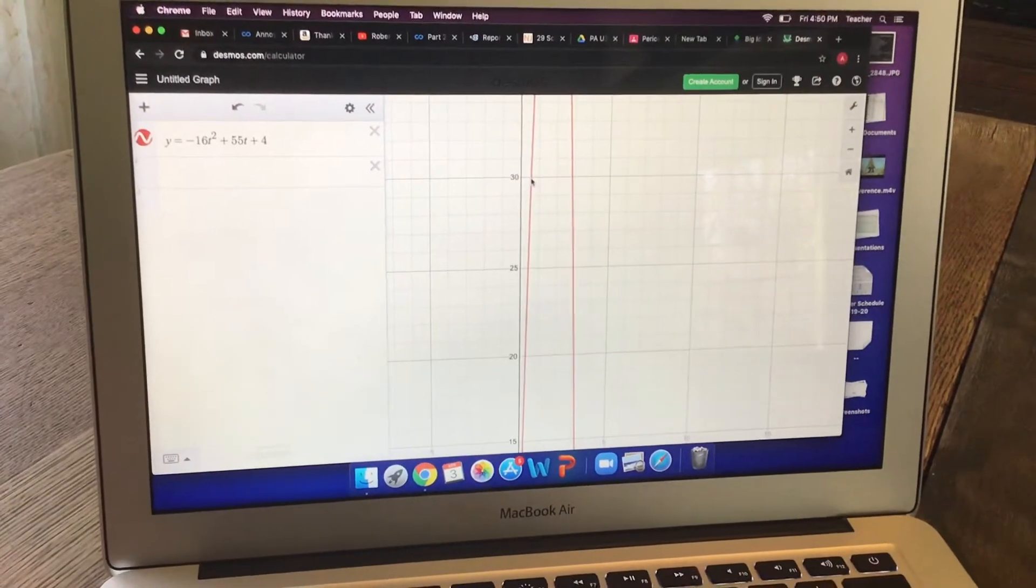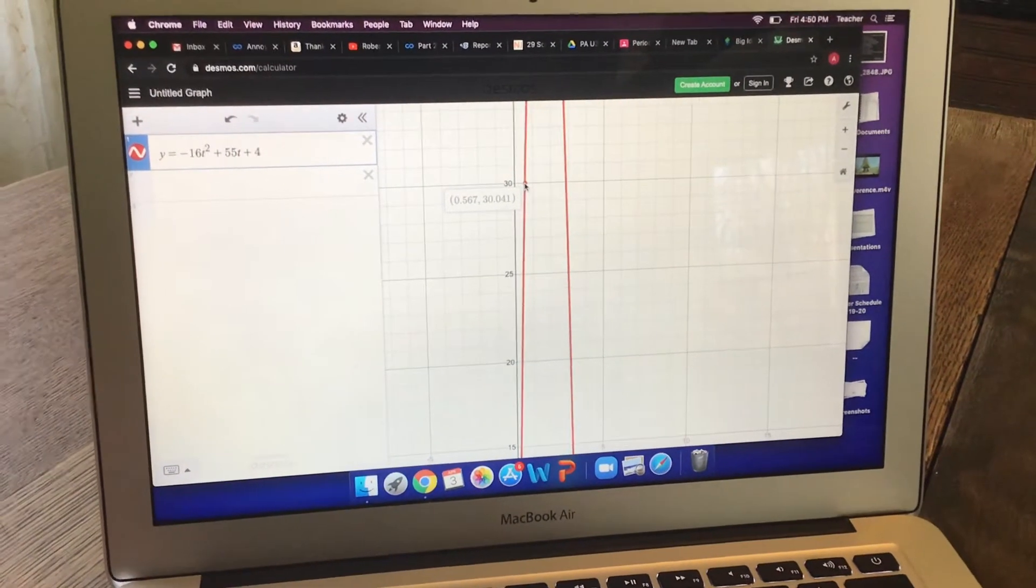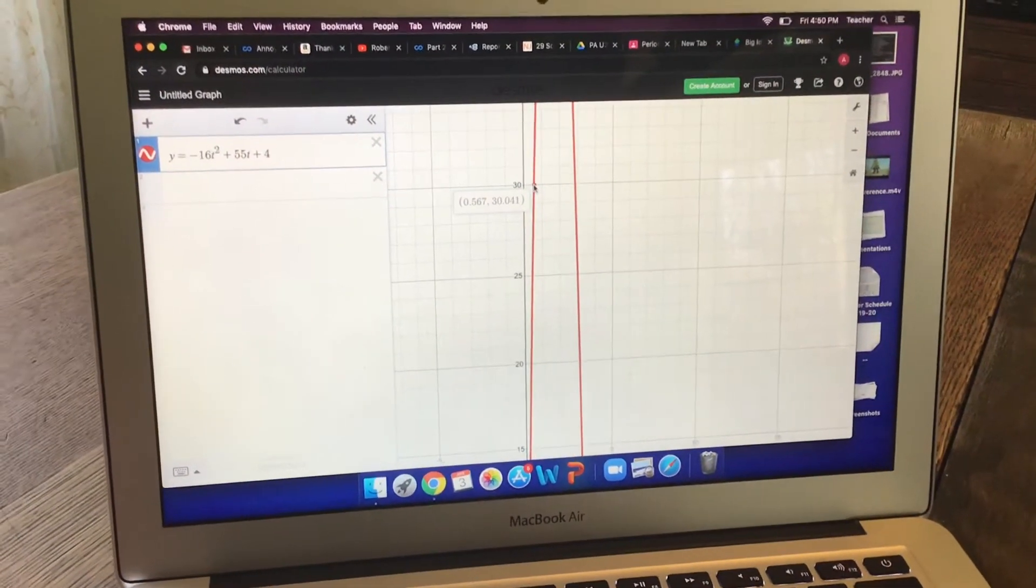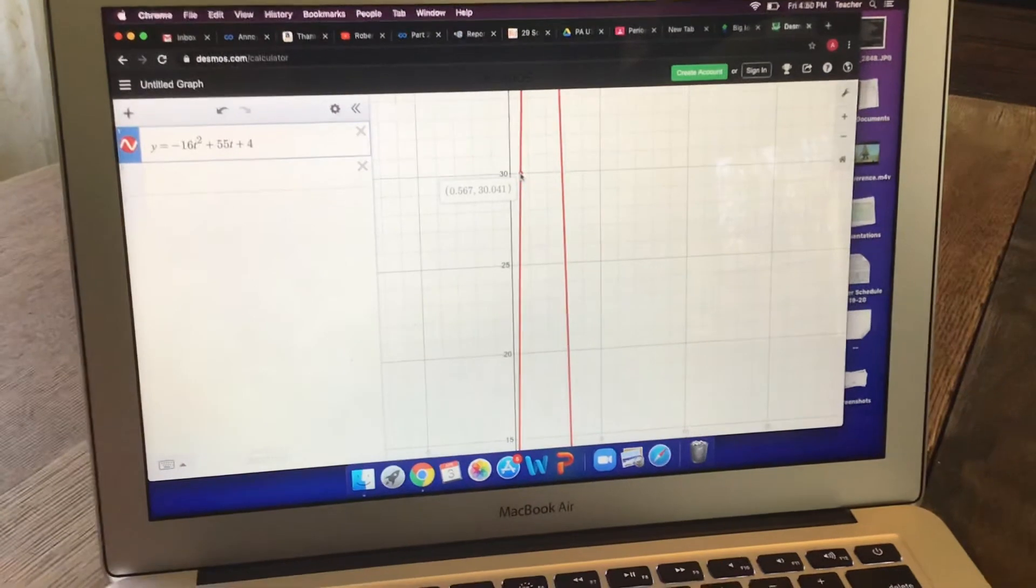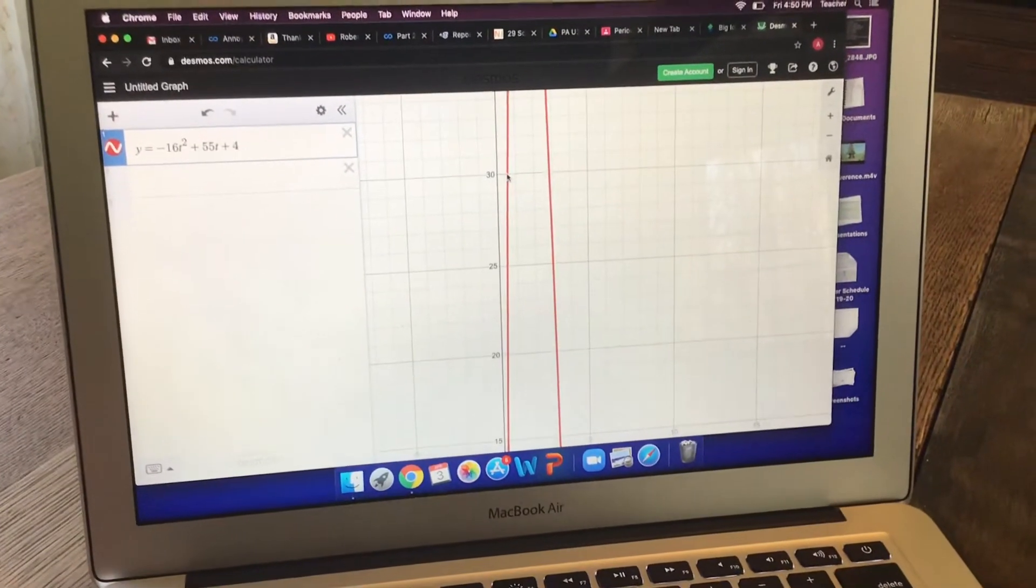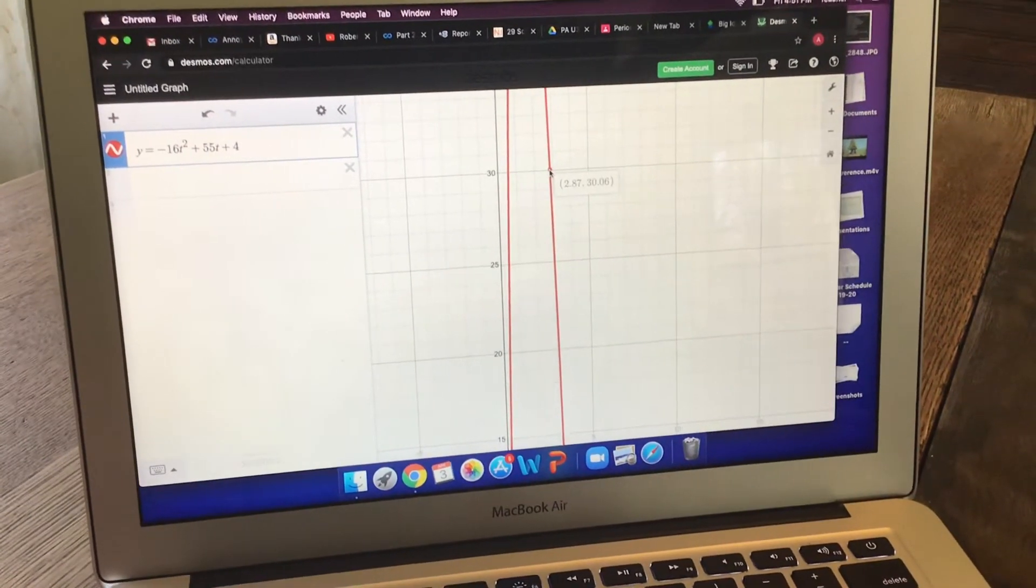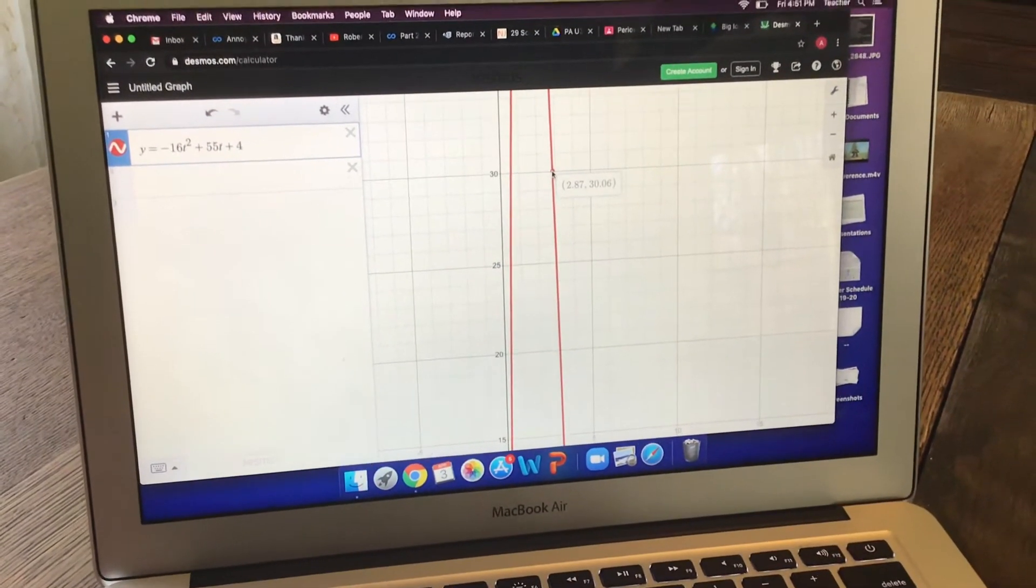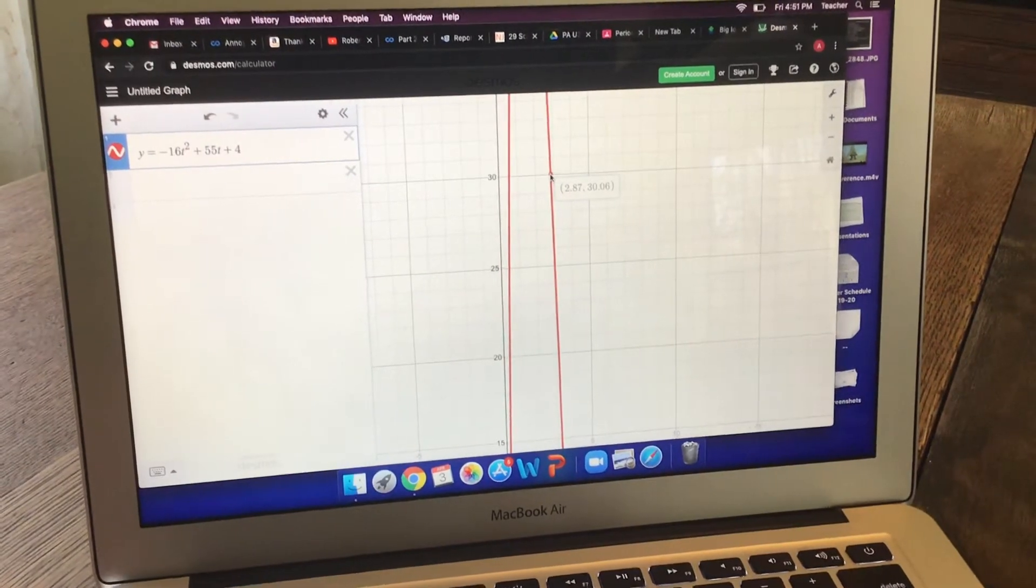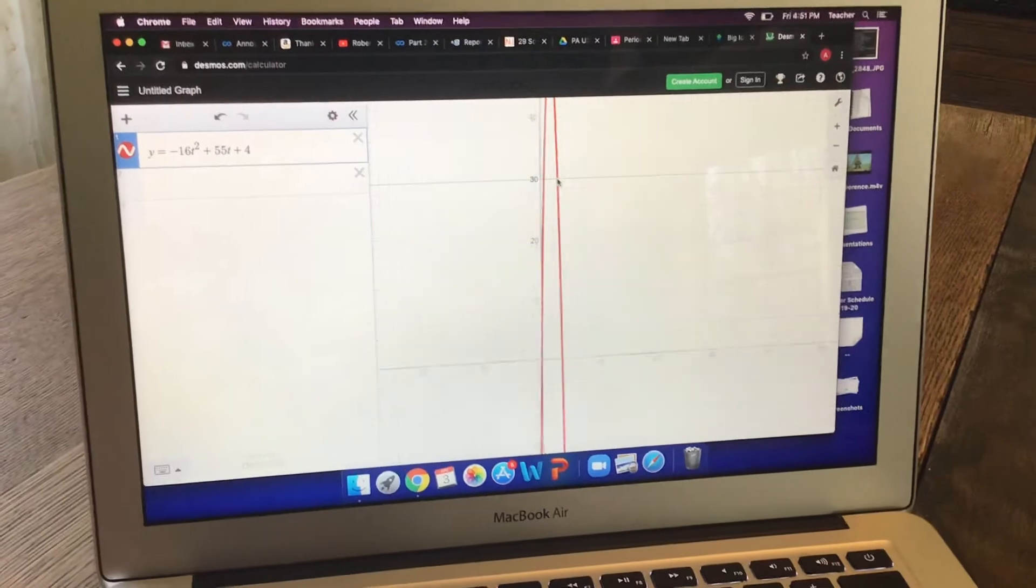30 feet. So at 30 feet, the ball is 0.567, and so we're going to round up to 0.6. And then over here, it was also at 30 feet, and that is 2.87. So we'll round that to 2.9. And so that's actually the best and easiest way to get your answer for something like that.